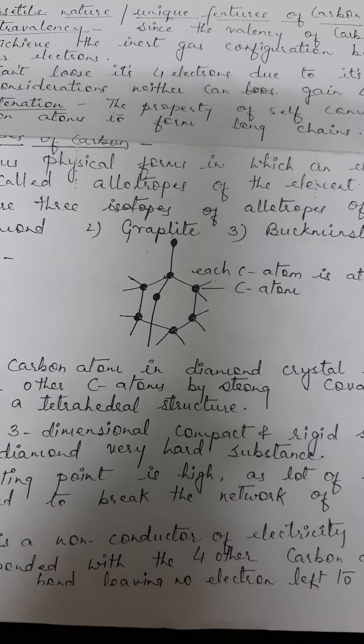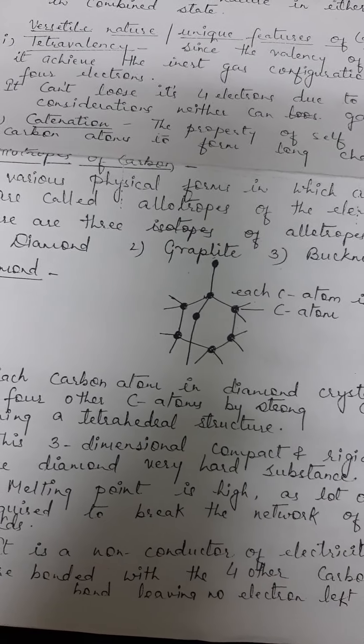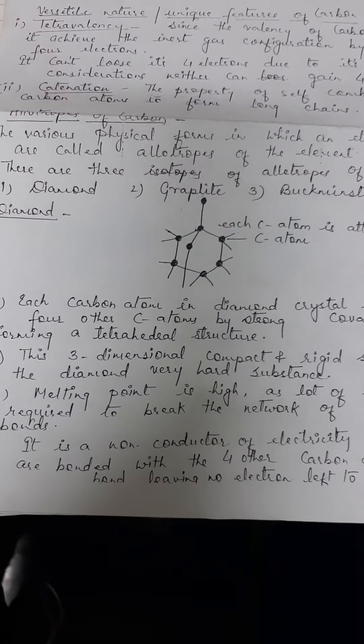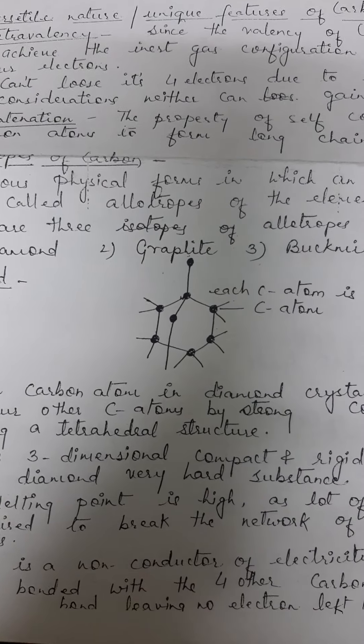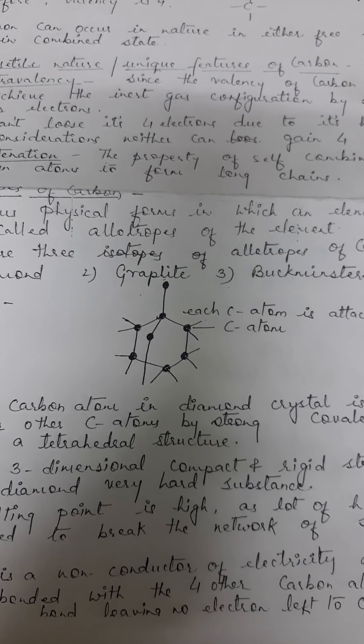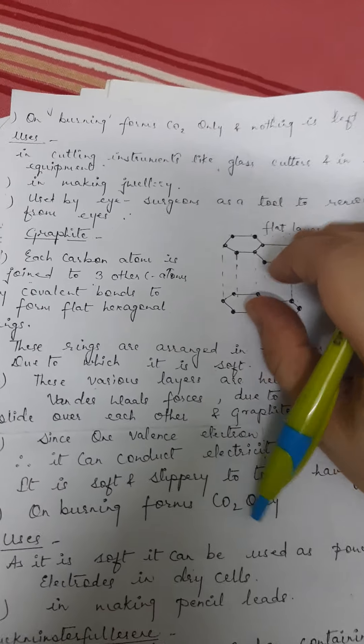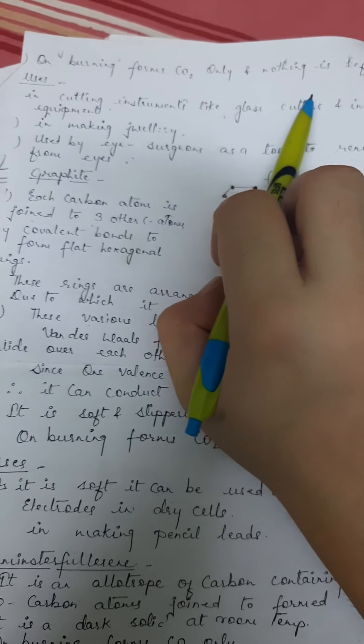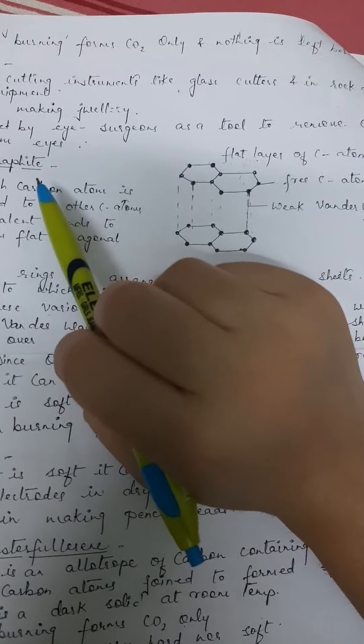Three-dimensional structure, compact, rigid structure. That is why diamond is a very hard structure. Its melting point is very high. You need a lot of energy to break diamond. Diamond is the hardest substance. It is a non-conductor of electricity because each carbon is joined with 4 others, no free electron, no free atom. That is why it is a non-conductor of electricity. Melting point is very high and strong covalent bonding forms a tetrahedral structure. What are the uses of diamond? On burning it forms CO2 only and nothing is left behind. Uses: in making jewelry, used by eye surgeons as a tool to remove the cataract of the eye, and in cutting instruments because it is a very hard structure with very high melting point.